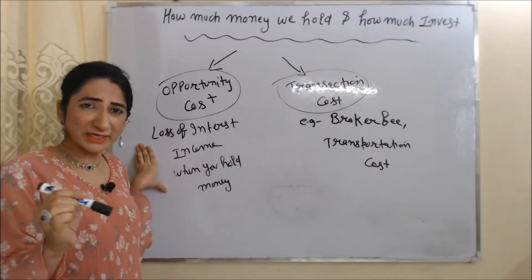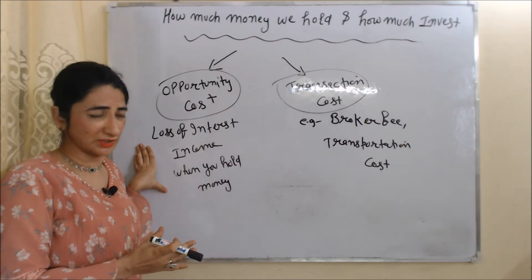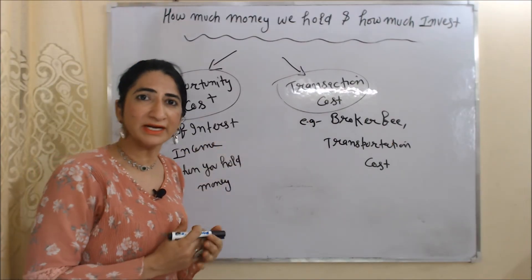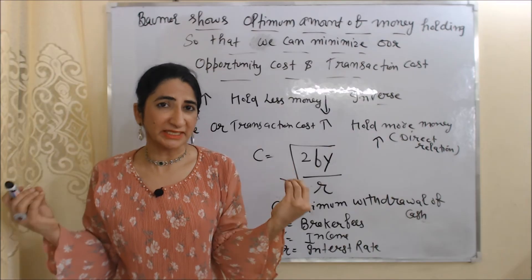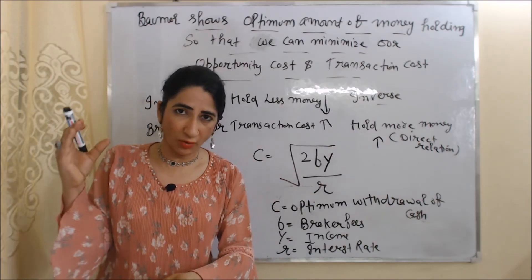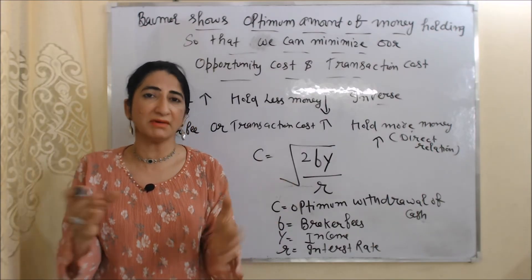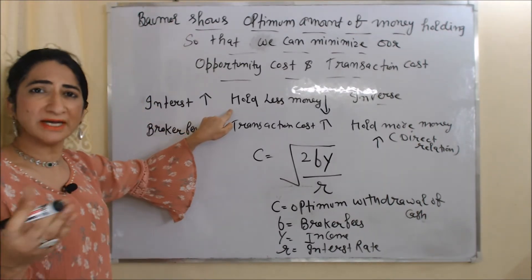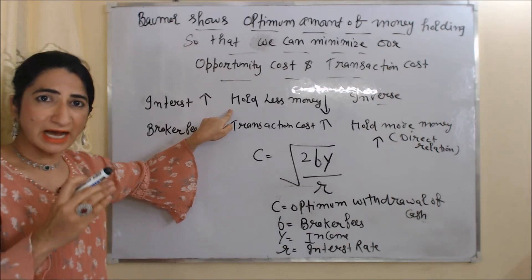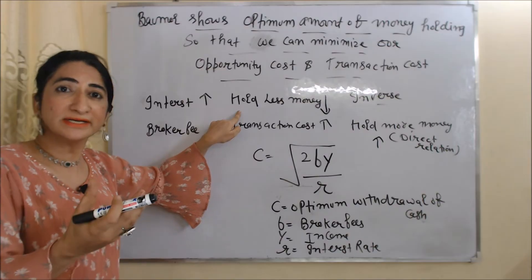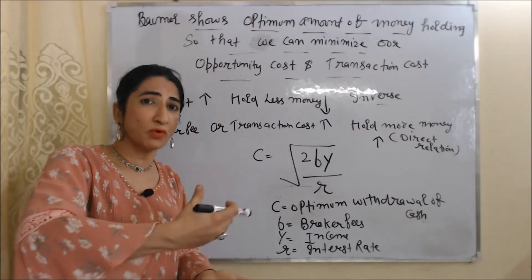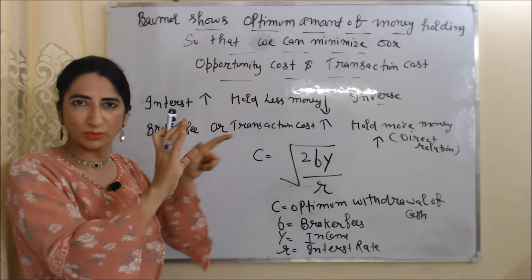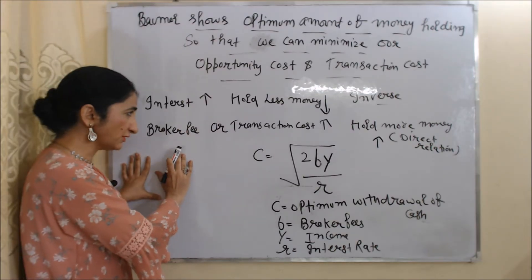This is a confusing state for the individual. If we hold money, we bear a loss of interest income. On the other hand, if we invest in bonds or keep money in a savings account, we bear broker fees and transportation costs. That's why in this theory, Baumol shows the optimum amount of money holding to minimize both opportunity cost and transaction cost. As we know, interest rate and money holding have an inverse relation: when interest rate is high, we hold less money because we invest more to earn higher interest income.